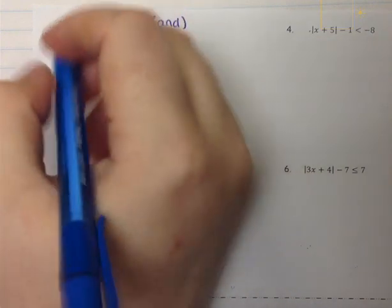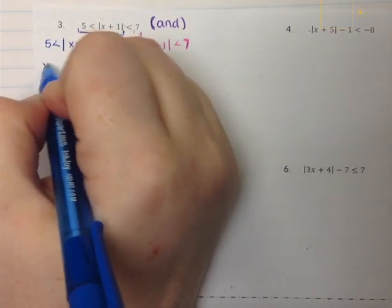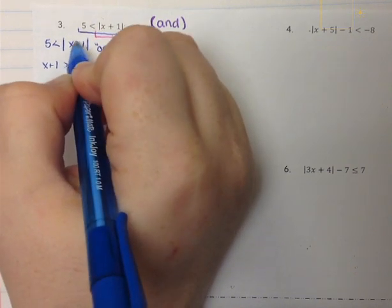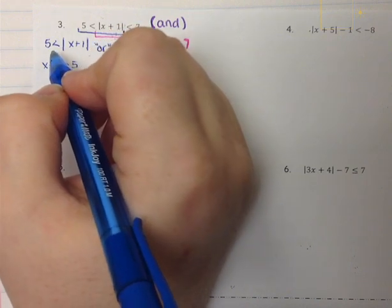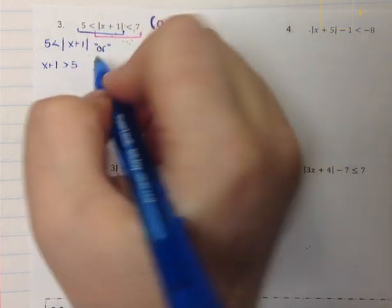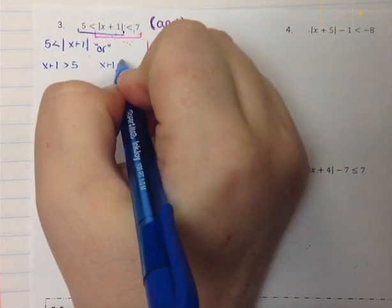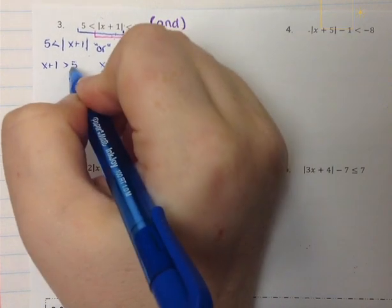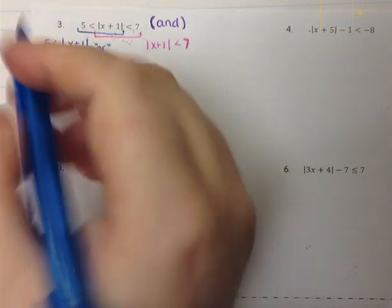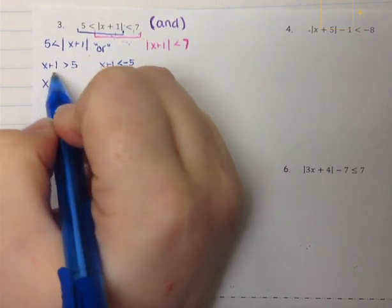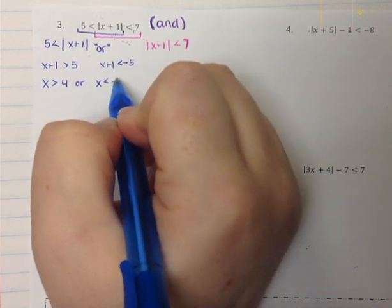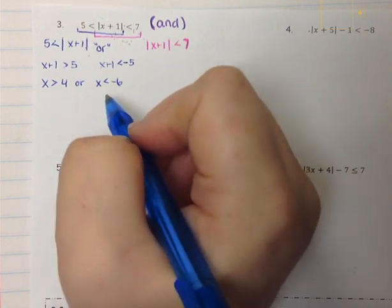So I'm going to separate them. x plus 1 is greater than positive 5, because the absolute value is allowed to be bigger than a positive 5, and positives can be bigger than positive 5. The other one will be x plus 1 is less than negative 5, because we flip the inequality and change the sign. Solving this: x is greater than 4, or x is less than negative 6.